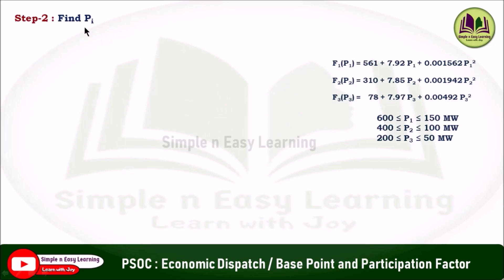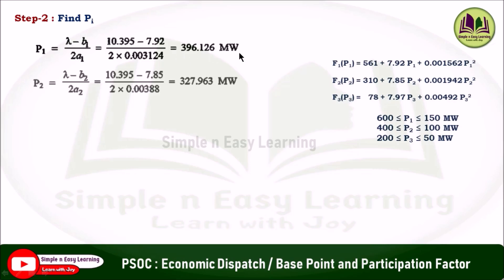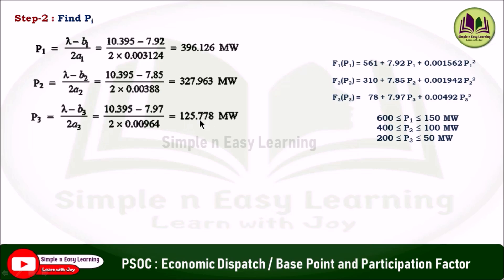Step 2: Find power generation Pi using the formula Pi = (lambda − bi) / (2·ai). For unit 1: P1 = (10.395 − 7.92) / (2 × 0.001562) = 396.126 MW. Similarly, P2 = (lambda − b2) / (2·a2) = 327.963 MW, and P3 = 125.778 MW.